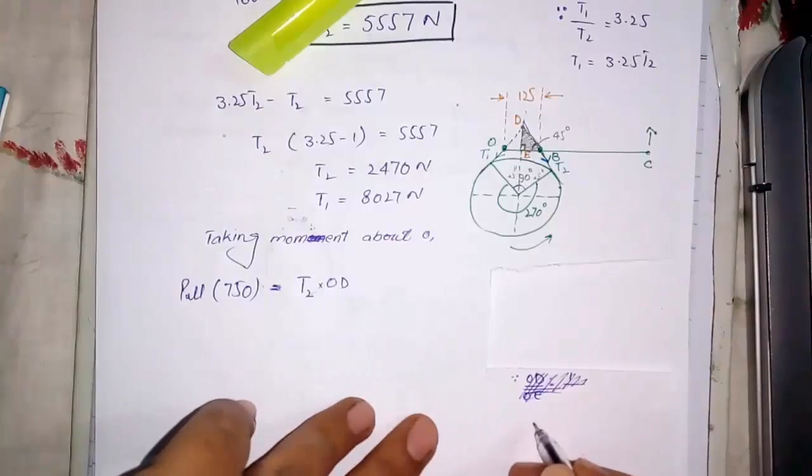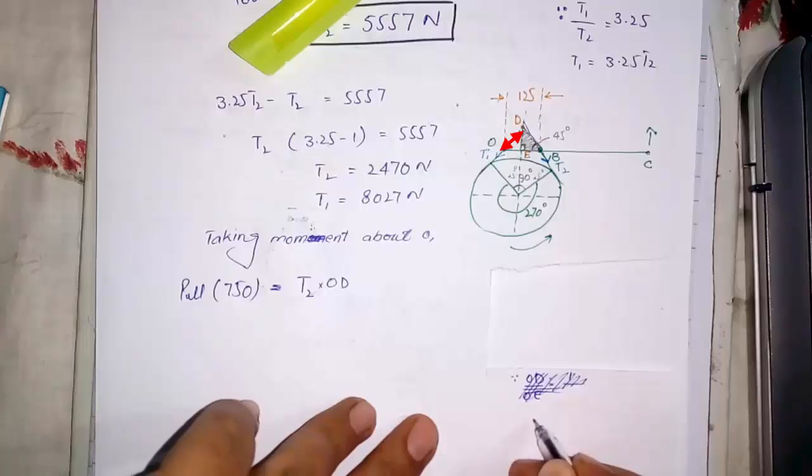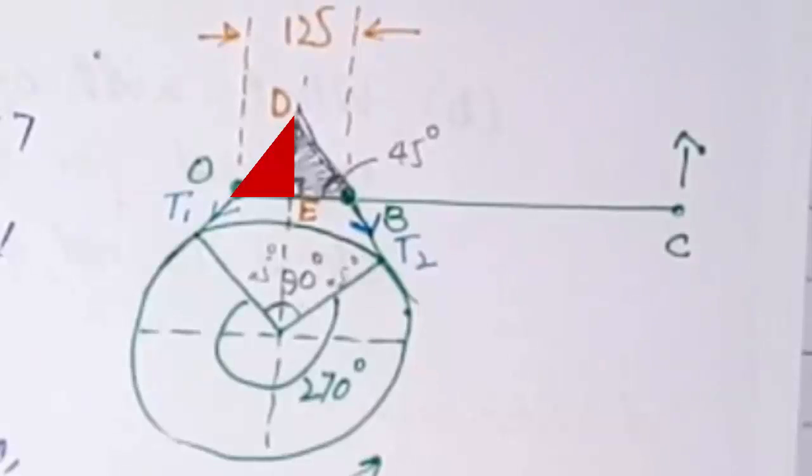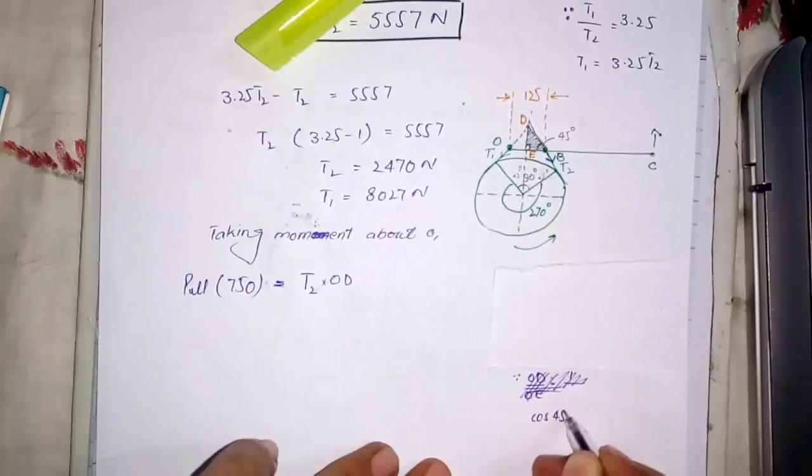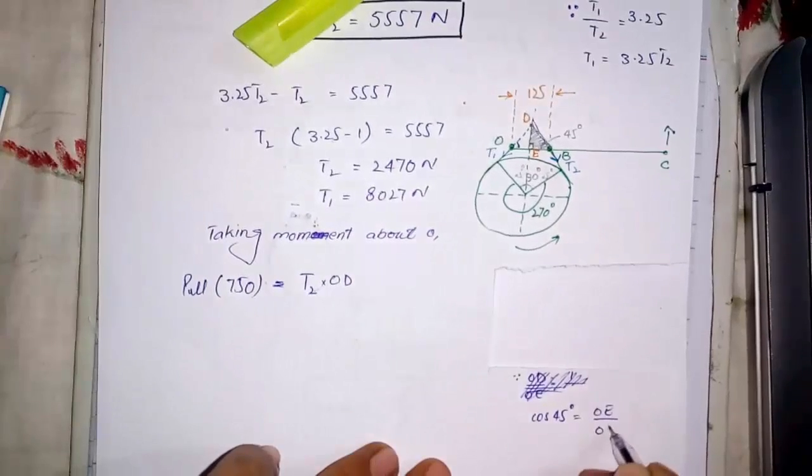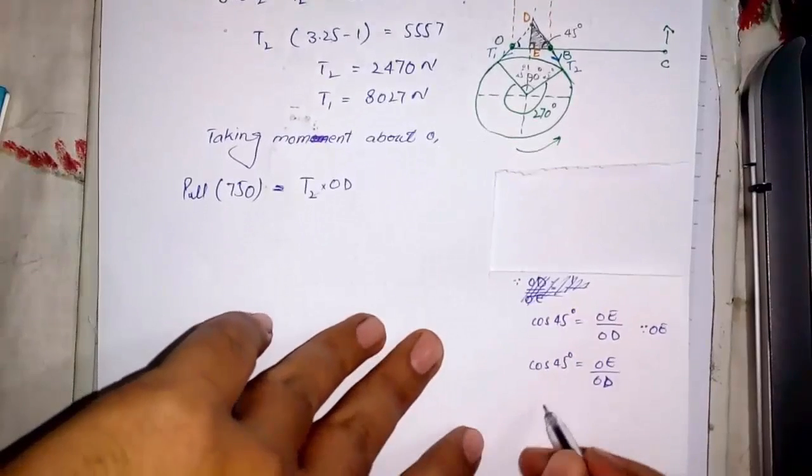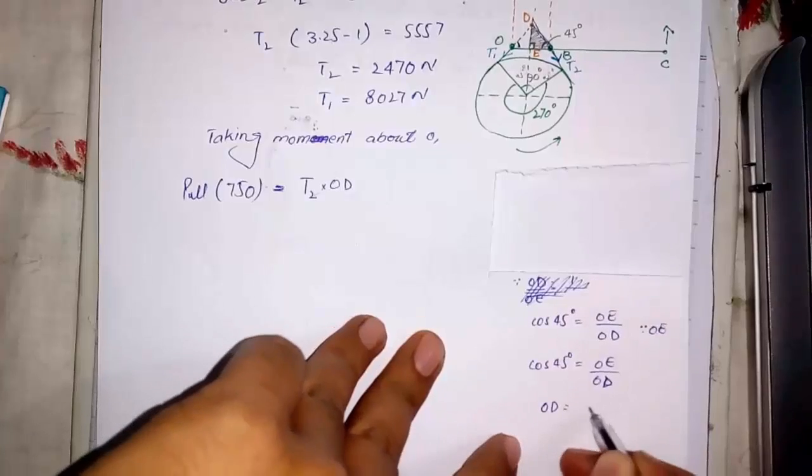With T2 force, the distance would be od. Now find od. In this triangle, cos 45 is equal to oe divided by od. And from figure oe is half of the ob or 125 mm.